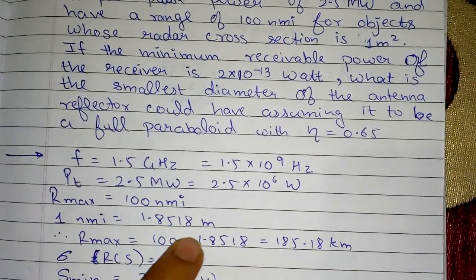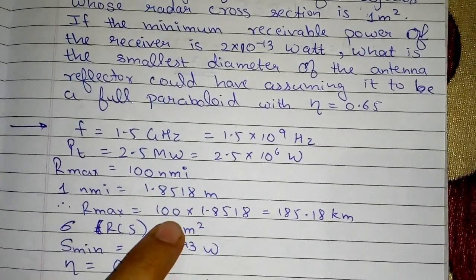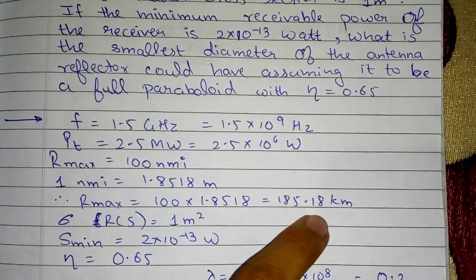And range 100 NMI, so that is Rmax. Rmax is 100 NMI. What is this NMI? We know that 1 NMI is equal to 1.8518 kilometers.